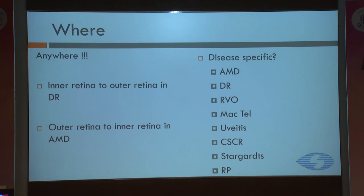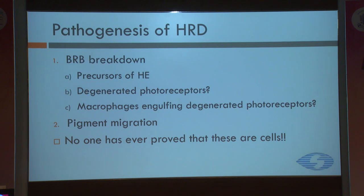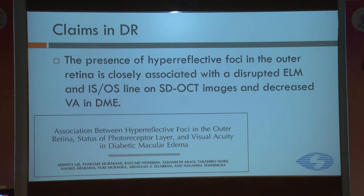HRF can be anywhere — from the inner retina to outer retina in DR, and it is supposed to travel from the outer retina to inner retina in AMD. Why does it happen? Because of the blood-retinal barrier breakdown. Some say it is a precursor to hard exudates; others say they are degenerative photoreceptors, or macrophages which have engulfed degenerative photoreceptors. Another theory is pigment migration, but nobody has ever proved that these are cells. The presence of these in the outer retina is closely associated with disrupted ELM and IS/OS line, and this has been said to be the cause of decreased visual acuity in these patients.